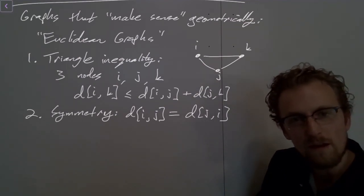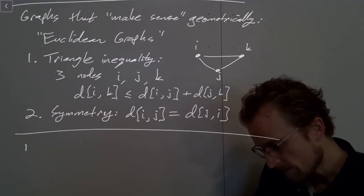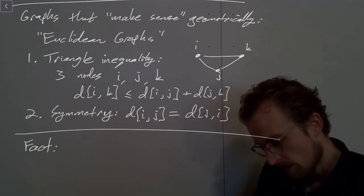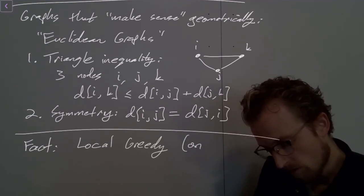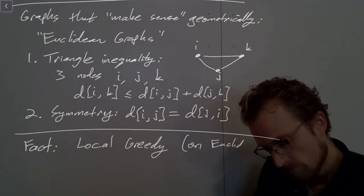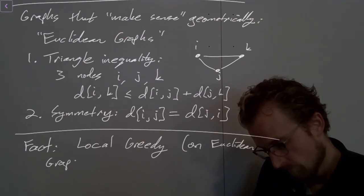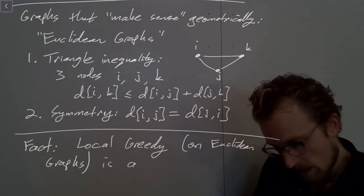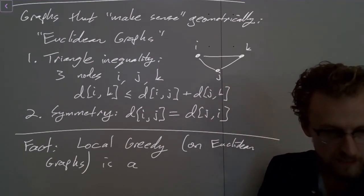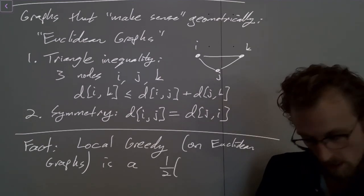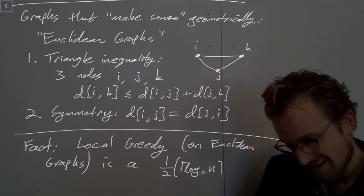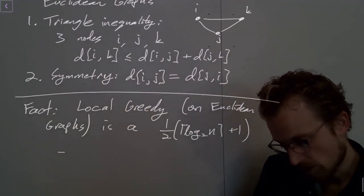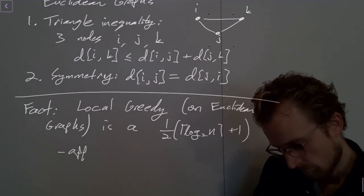And we get some stuff that works out really nicely for us. So our first fact is the local greedy algorithm that we looked at before on Euclidean graphs is a one-half times the ceiling of log base 2 of n plus 1 approximation.